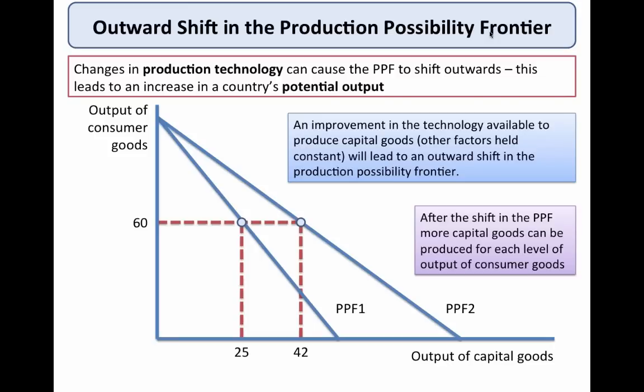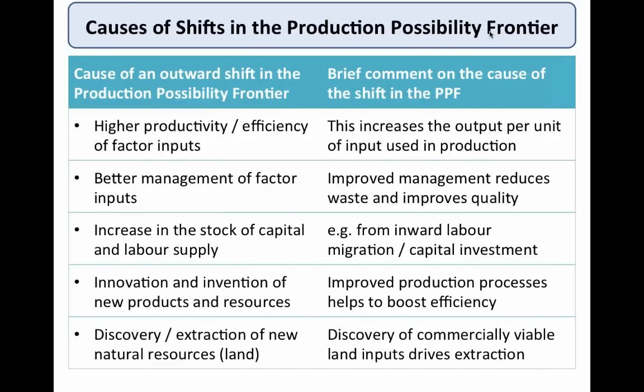Crucially, we think about when a production possibility curve can shift. In this example, I've shifted the PPF from PPF1 to PPF2, suggesting we can now increase our output of capital goods although we can't increase our total output of consumer goods. That might have been caused by an innovation in manufacturing capital goods, an increase in the supply of resources available to that industry, or perhaps better management. Either way, there's a gain in productive potential and productive capacity — for example, we can keep our output of consumer goods at 60 but increase our output of capital goods from 25 to 42.